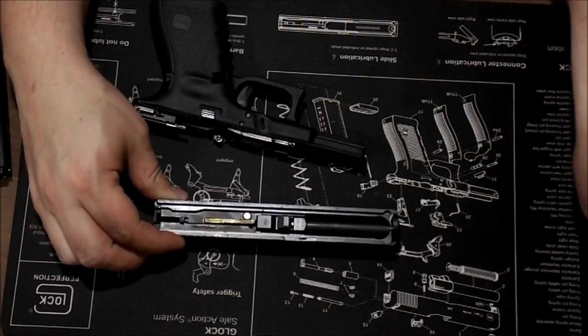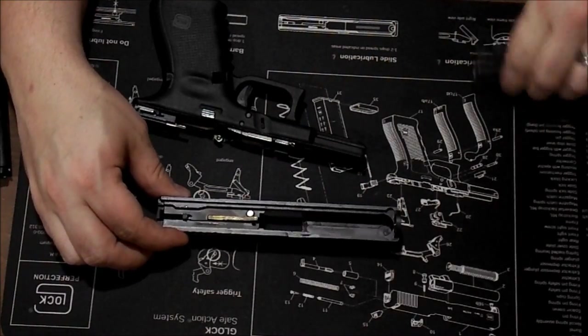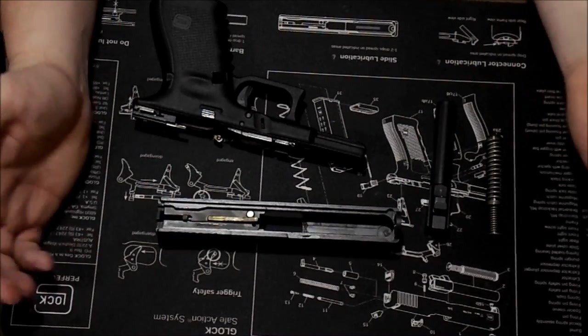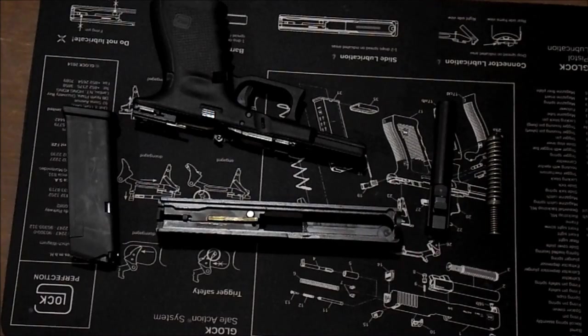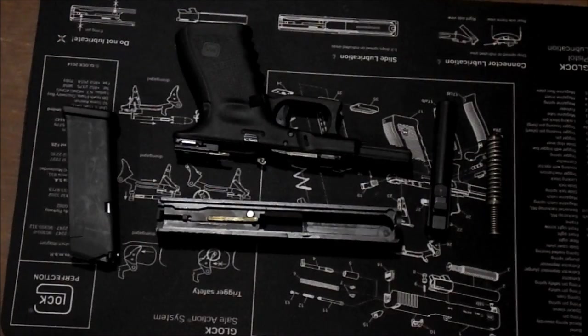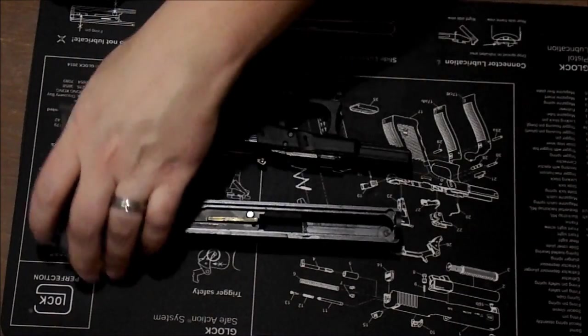Remove the guide rod, set that off to the side. Remove the barrel, set that off to the side. So that is the basic field strip of a Glock firearm. That's all there is to it. There's not much else to those firearms. So we'll set those off to the side, and we'll get into the full disassembly of the firearm.